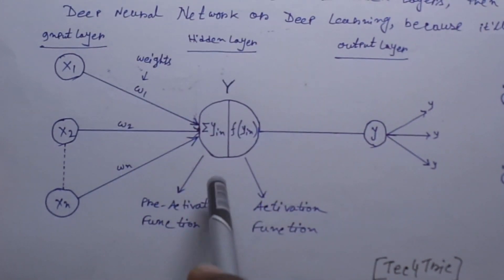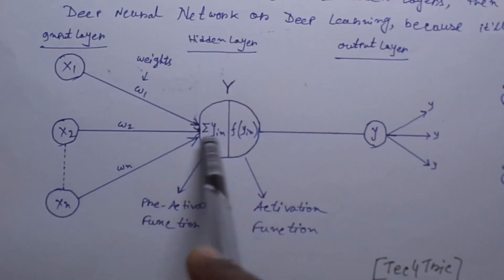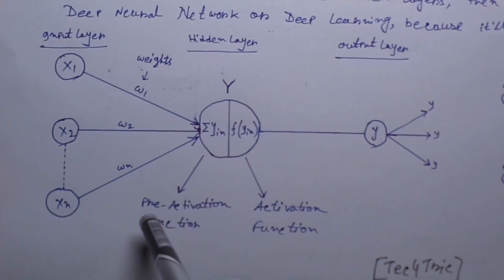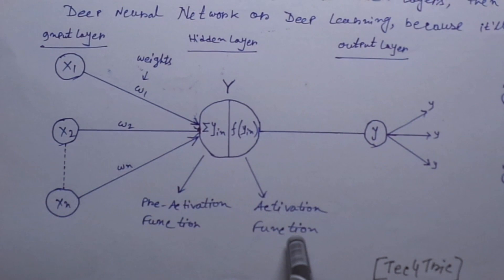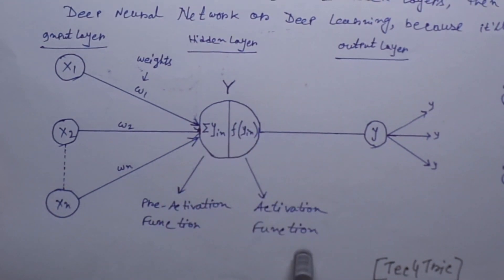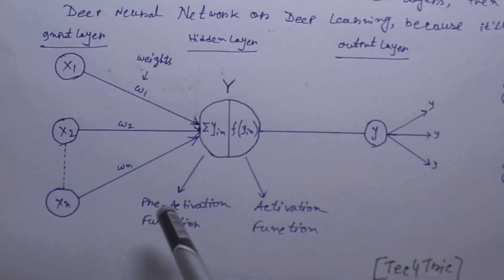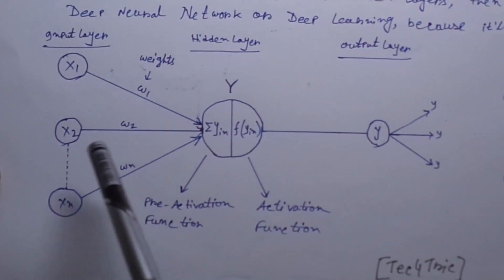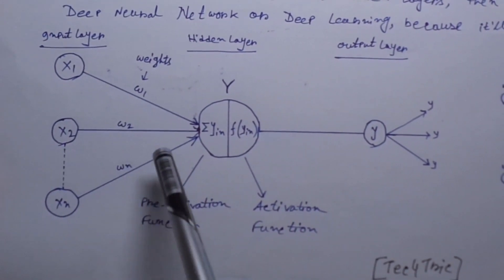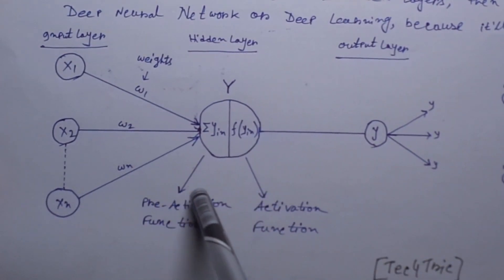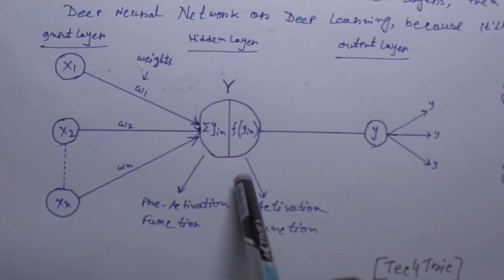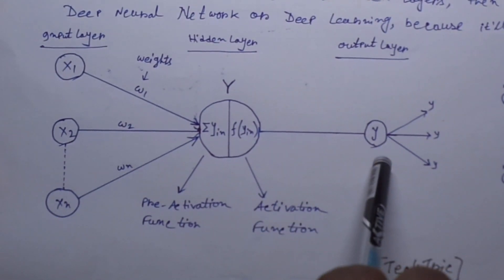Now observe the hidden layer carefully. There are two parts. The first one is pre-activation function and the second one is activation function. In the pre-activation function it takes all the inputs as summation of y inputs. Then it passes the information to the activation function. Here the signal gets activated and it goes to the output layer.